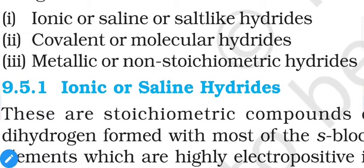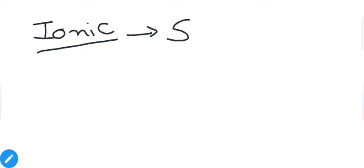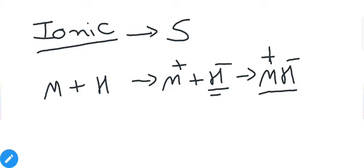Ionic hydrides are usually formed with strong metallic elements. Strong metals belong to the s-block and are the strongest metals in the periodic table because they have one or two extra electrons beyond noble gas-like configuration, so they tend to release electrons and form positive ions. When a metal combines with hydrogen, the metal forms a positive ion and hydrogen becomes a negative ion — a hydride — giving us a metal hydride compound.